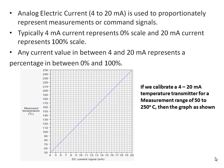Any current value between 4 and 20 mA represents a percentage between 0 and 100%. If we calibrate a 4 to 20 mA temperature transmitter for a measurement range of 50 to 250 degrees centigrade, then the graph is as shown — with 4 to 20 mA on the x-axis and 50 to 250 degrees centigrade on the y-axis. 4 to 20 mA is a commonly used industry standard for measuring and transmitting the process variable to a remote location.